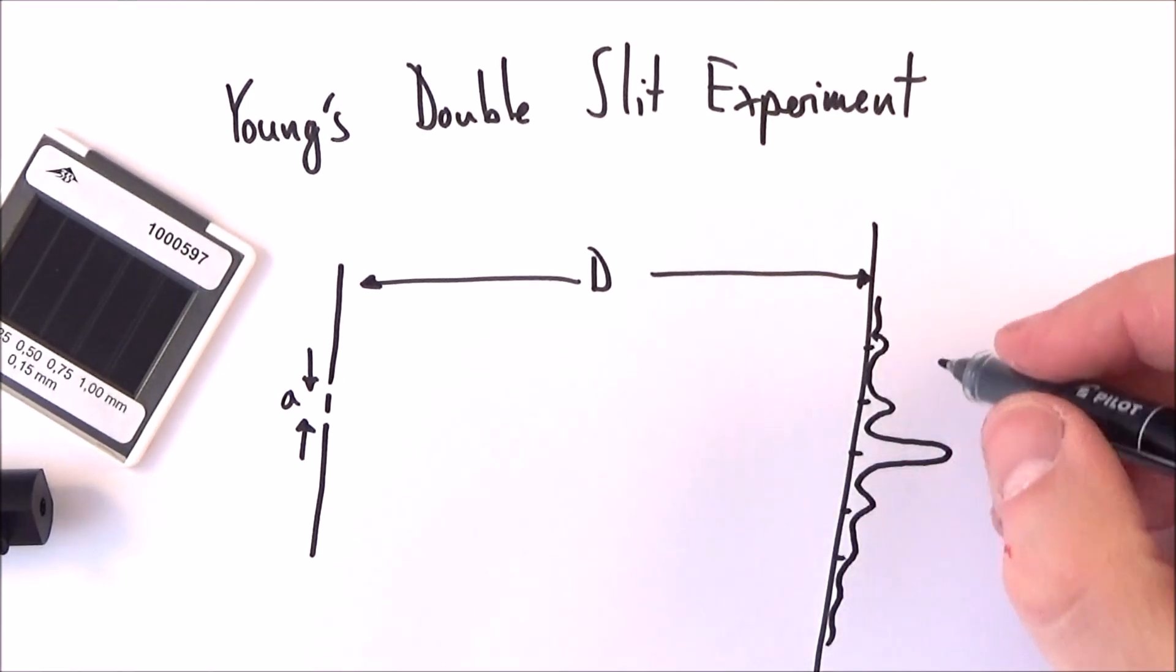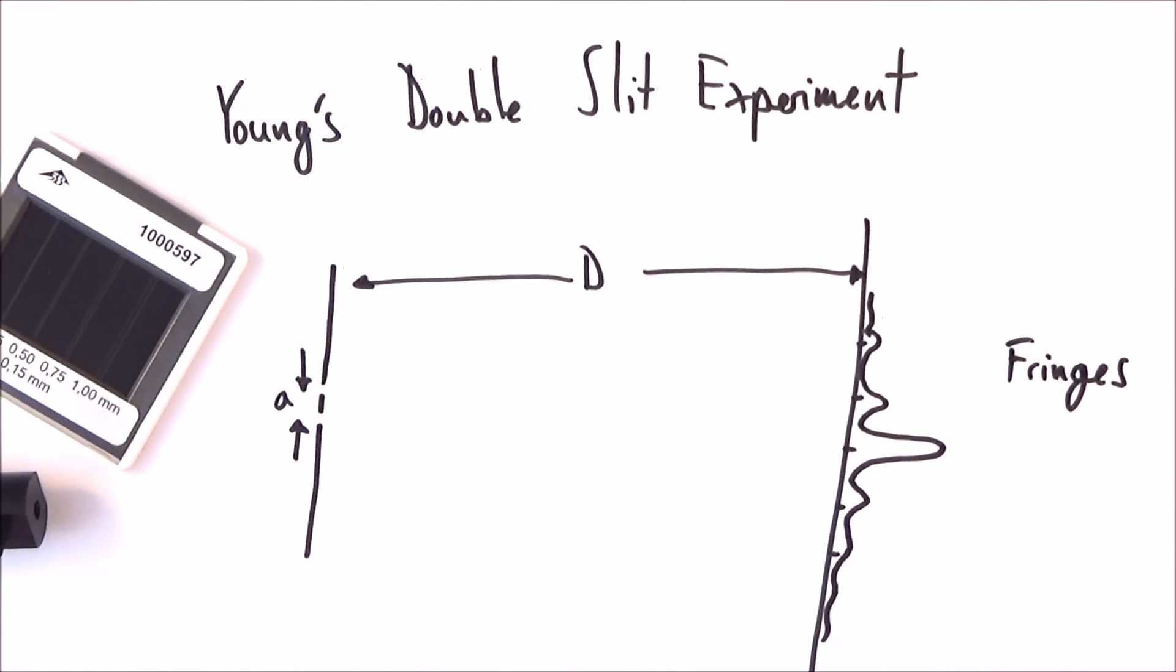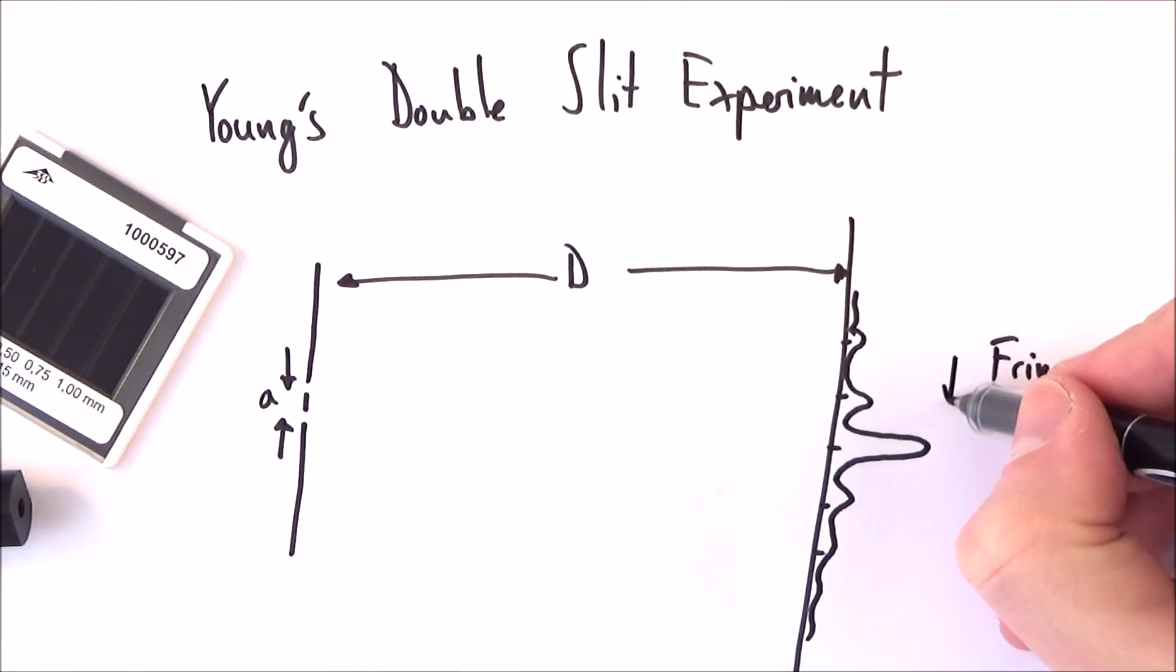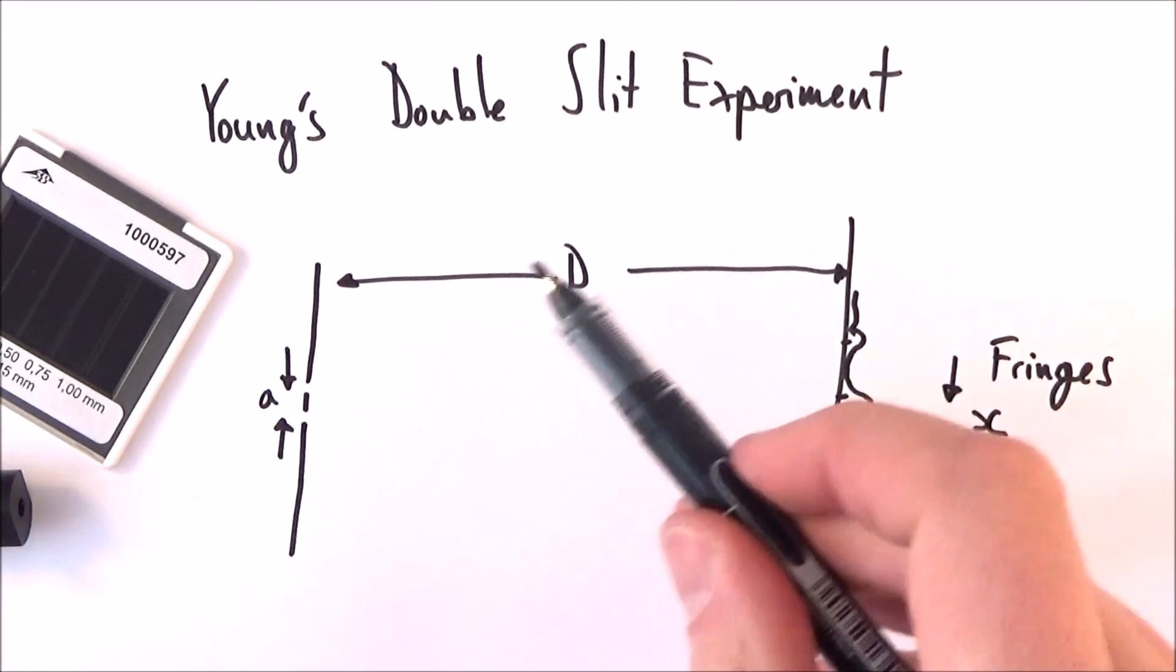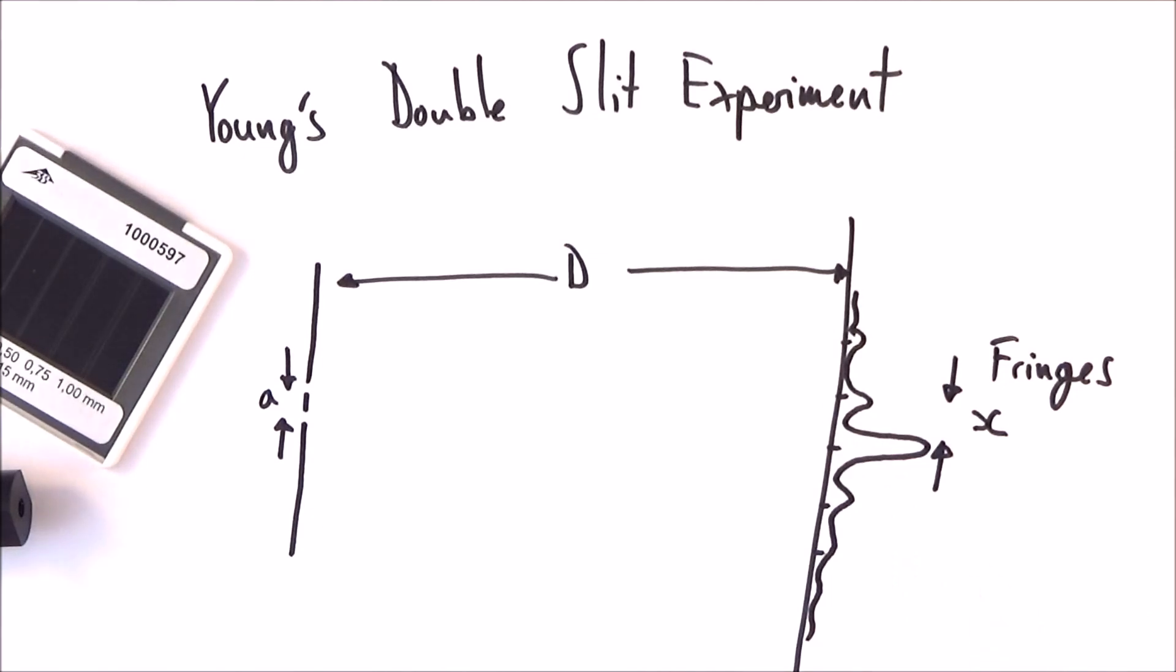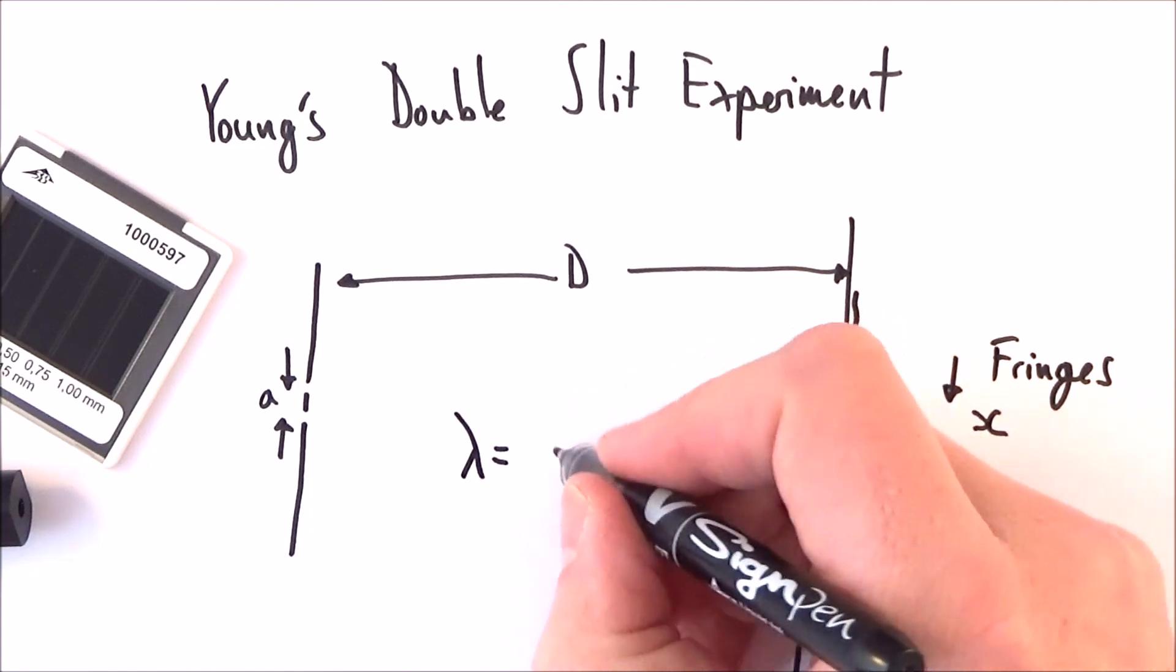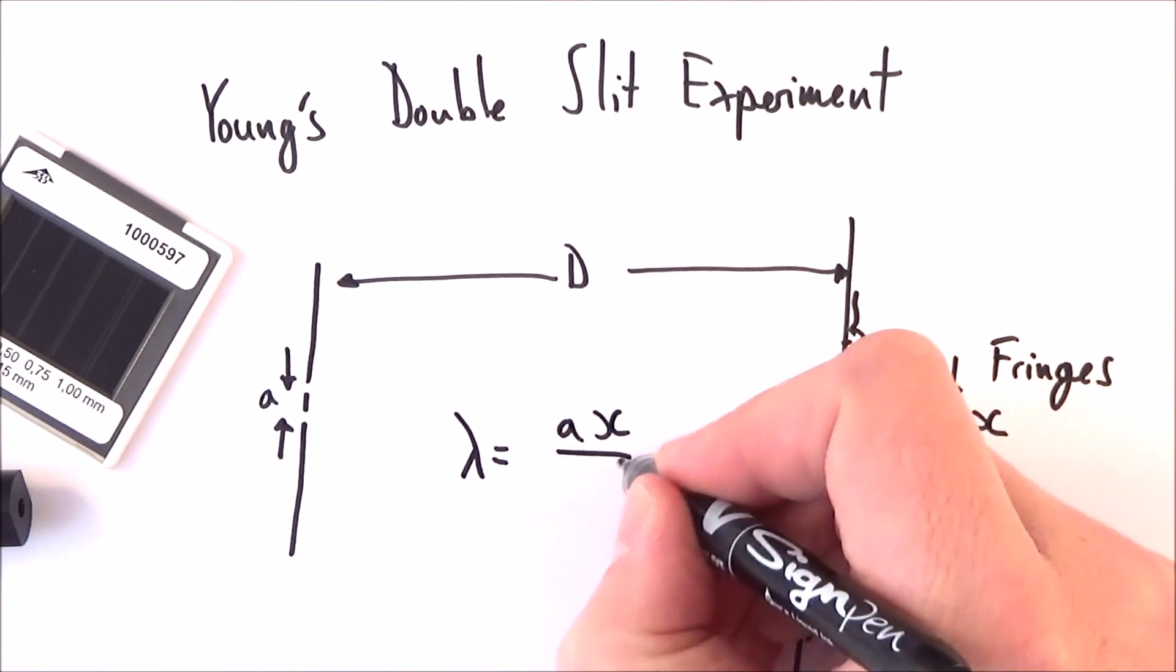And what we can look at is the separation of these fringes. In a lab in the dark it's a lot easier to measure, but we can look at the distance between fringes as equal to x. If we look at a, d, and x, these are all related to the wavelength of light. What we find is that the wavelength of light is equal to ax over d.